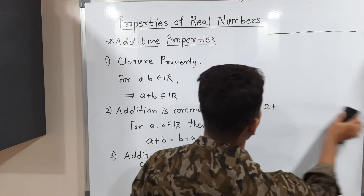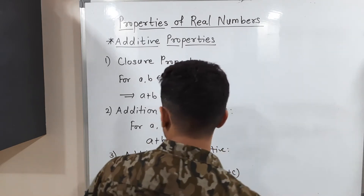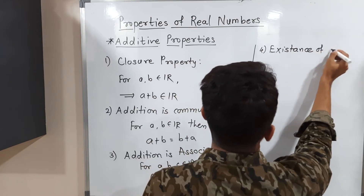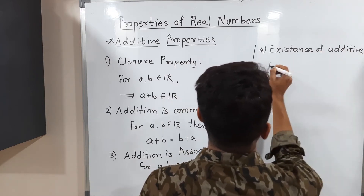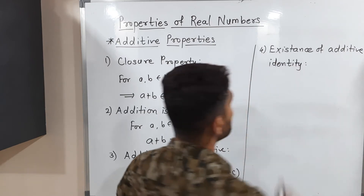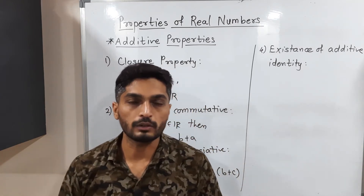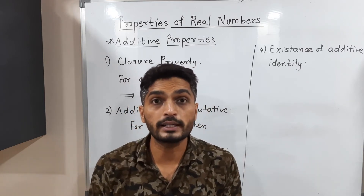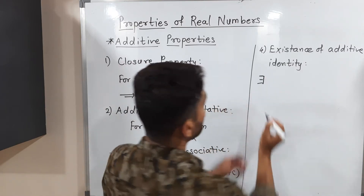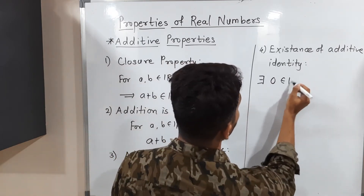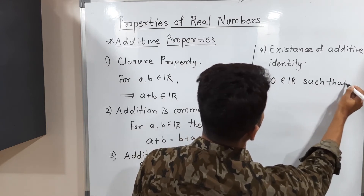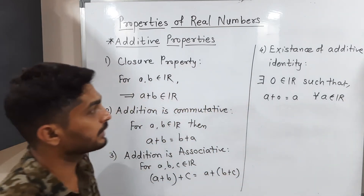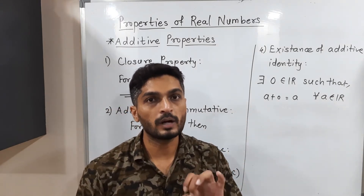The next property is existence of additive identity. Zero is the only number such that if you add any number to zero, you get the same number back. There exists zero belonging to R such that a plus 0 equals a, for all a belonging to R. Therefore we call zero the additive identity.